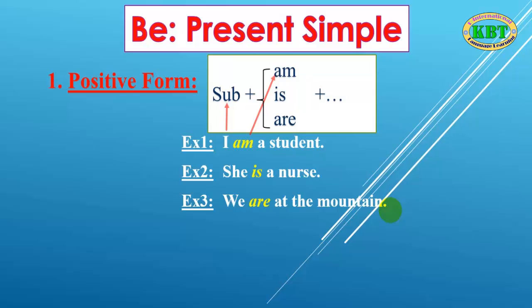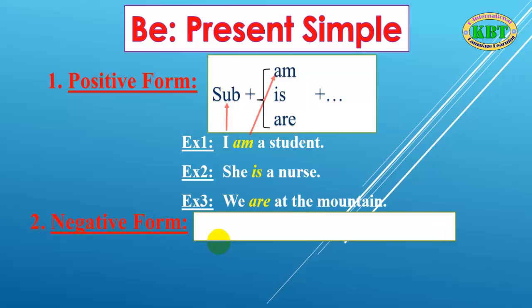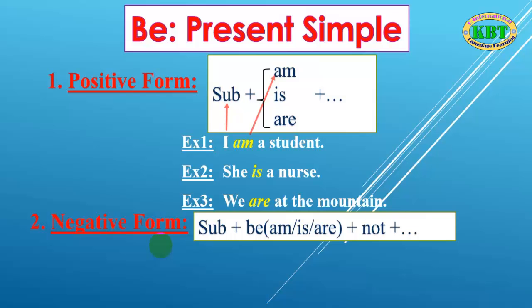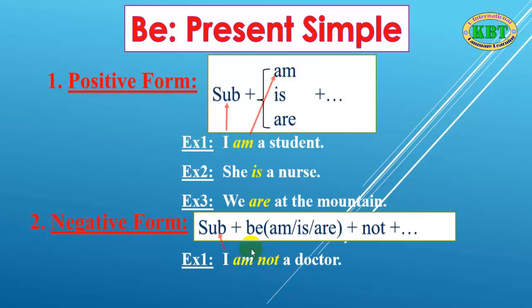Now let's go to the negative form. How do we form the negative of 'to be' in present simple? We add 'not' after the verb to be. Let's look at the example: 'I am not a doctor.' I is the subject, am is the verb to be, and we add 'not' here to show the negative.